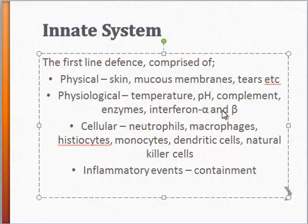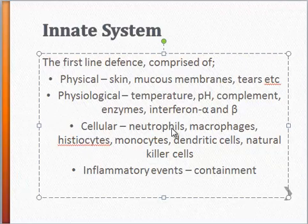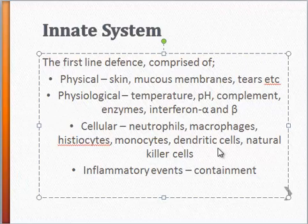Then you have your cellular components, such as neutrophils and macrophages — phagocytic cells present in our immune system. They're considered part of the innate system because they're not specific for certain antigens; they react one and the same to all foreign antigens. There are also dendritic cells and natural killer cells, whose function is to present antigens to other cells so that specific antibodies can be formed. We'll talk about this in detail later — how they process antigens to help the adaptive immune response.